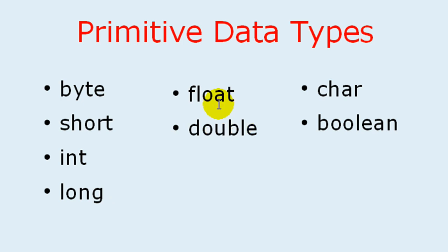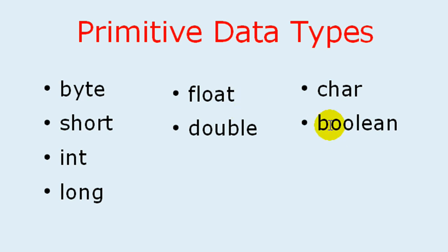The next group of data types are float and double. Float and double can hold decimal numbers — they can hold fractions. Float can hold smaller fractions and double can hold huge fractions. To give an example, 3.14 is a fraction. The other data types are char, which can hold one single Unicode character, and boolean, which is like a light switch — either it's true or false, on or off.